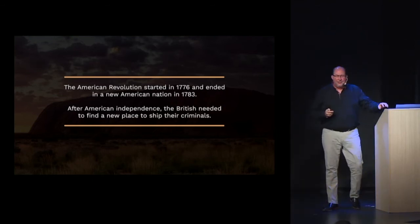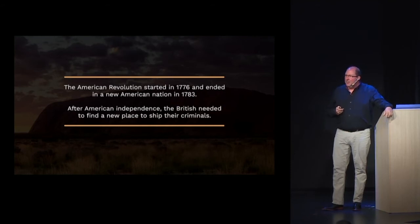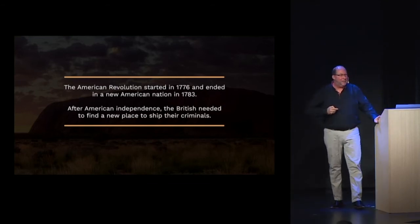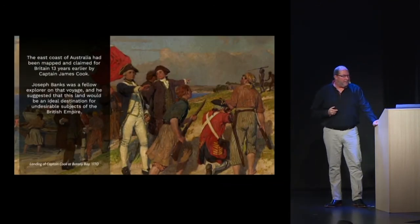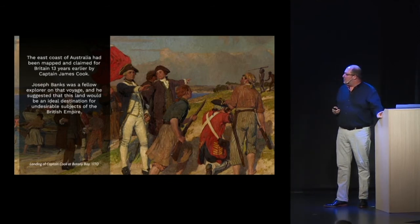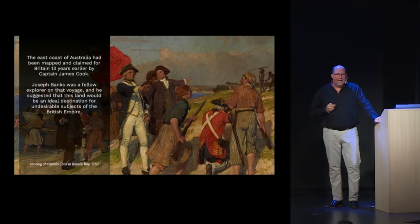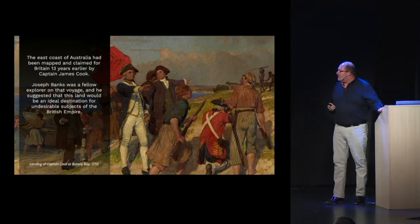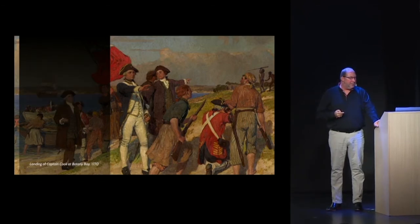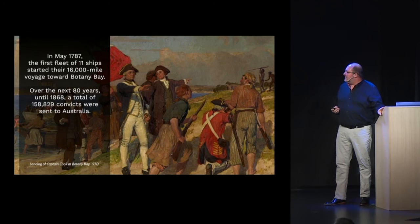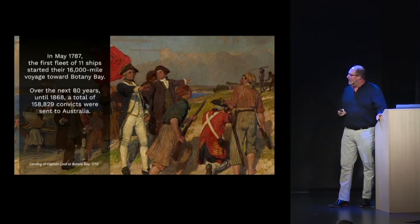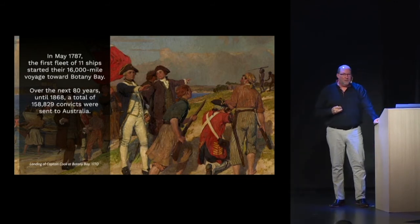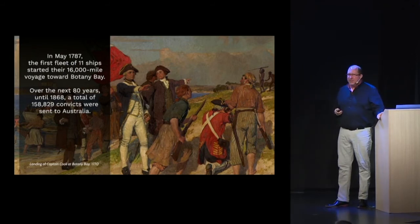After the Americans declared their independence, Britain realized they needed a new place to send their convicts. The east coast of Australia had been mapped and claimed by Captain James Cook 13 years earlier. Joseph Banks decided it would be the ideal place to ship undesirable subjects of the British Empire. In May 1787, the first fleet of 11 ships started their 16,000-mile journey towards Botany Bay. Over the next 80 years, a total of 158,000 convicts were sent to Australia.